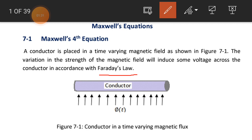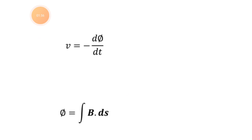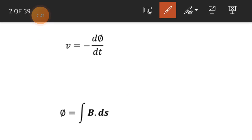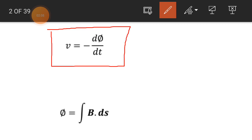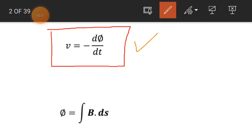In figure number 7.1, we place a conductor in a time-varying magnetic flux. The variation in the magnetic flux, the strength of the magnetic field, will induce some voltage across this conductor, and the voltage is given by Faraday's law. The voltage across this conductor will be equal to minus dΦ/dt.